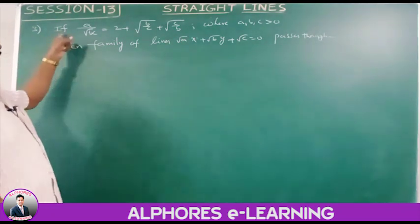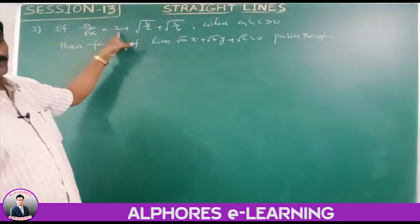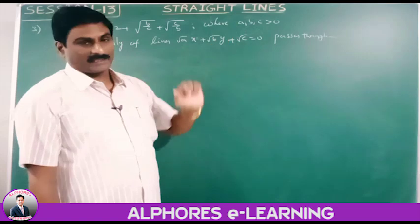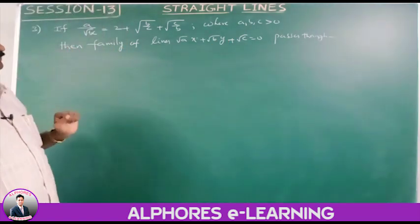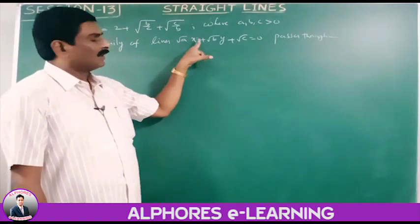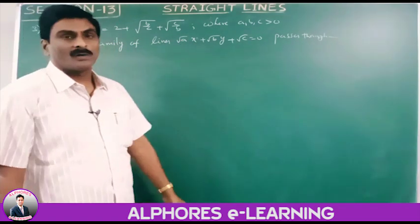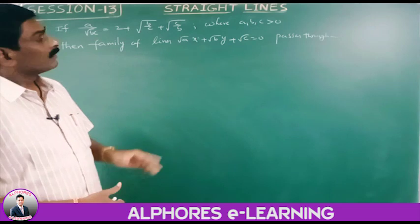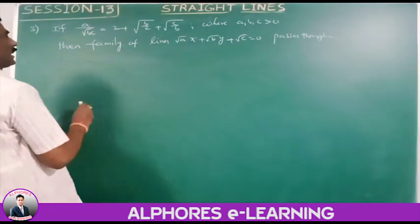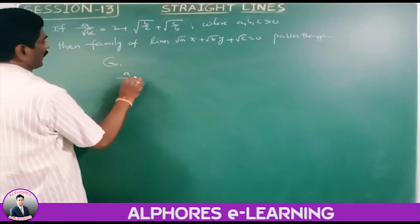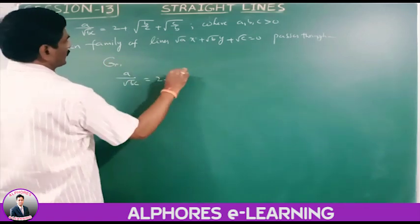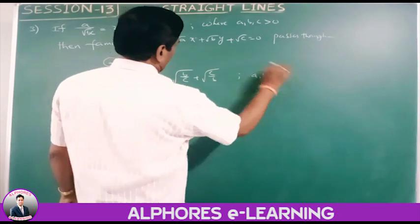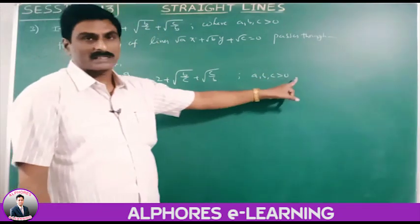Third problem: if a divided by root(bc) equals 2 plus root(b/c) plus root(c/b), where a, b, c are greater than 0, then the family of lines root(a)·x plus root(b)·y plus root(c) equals 0 passes through the point — find that point.